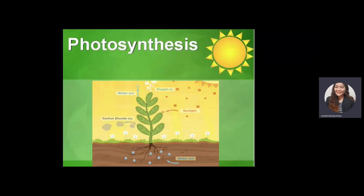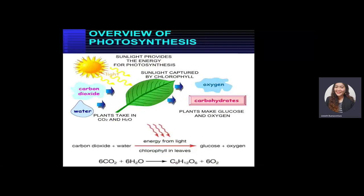Oxygen, as the byproduct, is released through the stomata of the plant. That is the overview of photosynthesis. At the bottom of our PowerPoint you can see the chemical formula for photosynthesis.